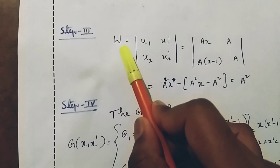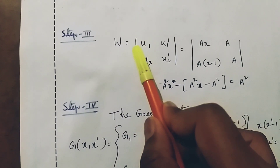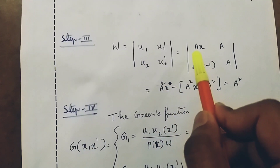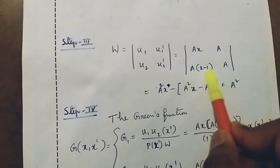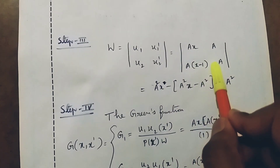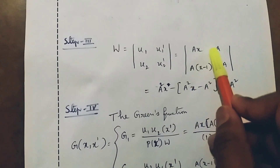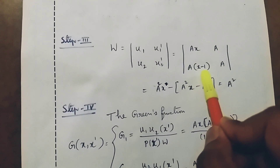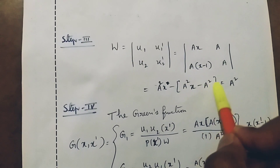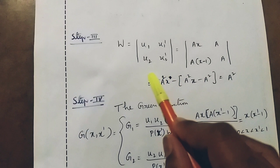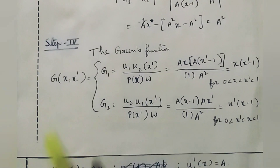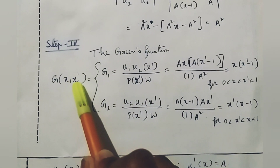Step three: W is the Wronskian determinant of u₁, u₁ dash, u₂, u₂ dash, which equals the determinant of ax, a, a(x minus 1), a. This gives a squared x minus a squared(x minus 1) equals a squared x minus a squared x plus a squared, which equals a squared. So the constant Wronskian W equal to a squared.